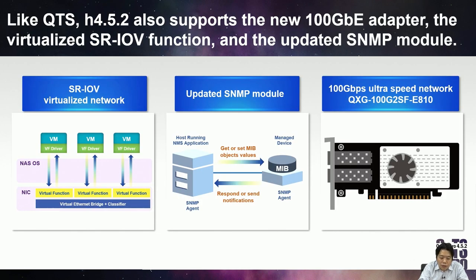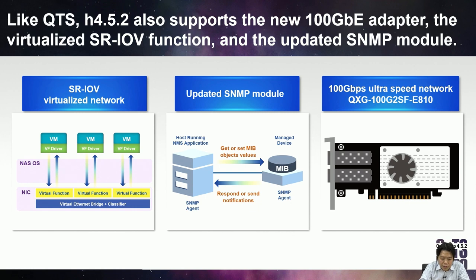Besides SNESync and Q-SAL, H4.5.2 also supports additional important features. We will support the 100G ultra-speed network adapter for server room environments. For Virtualization Station, we will support SR-IOV to pass through Ethernet to your virtual machine, which reduces the virtual machine's CPU loading and network latency. We also updated the SNMP module to provide more detailed information for network monitoring.